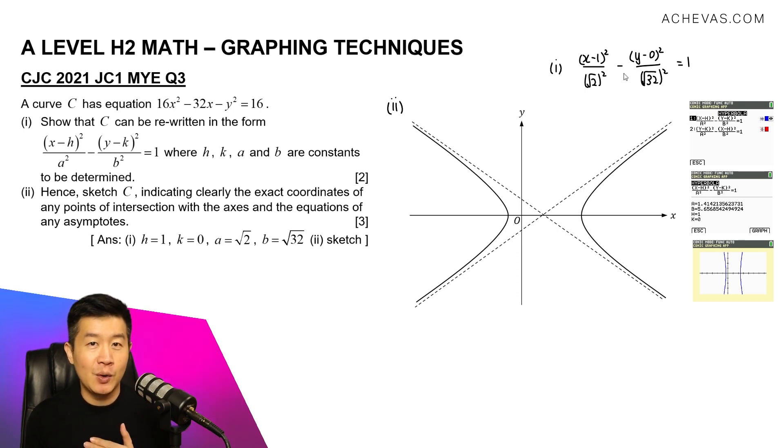Let us write down the two oblique asymptotes. So based on the equation that is given and based on how I have memorized the format of the oblique asymptote, they will look like this. y - 0 = (√32/√2)(±)(x - 1). So we have y = ±√16(x - 1), which is ±4(x - 1). So the two oblique asymptotes will be, one of them will be y = -4x + 4. The other one will be y = 4x - 4.